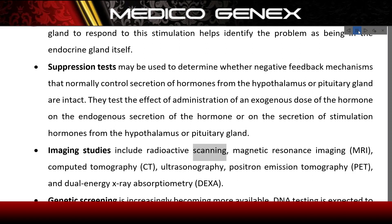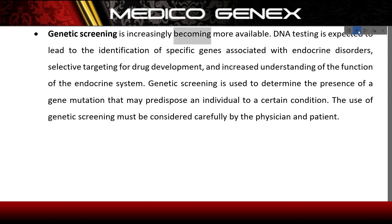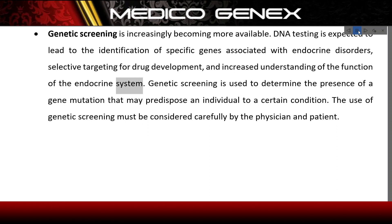Imaging studies include radioactive scanning, magnetic resonance imaging (MRI), computed tomography (CT), ultrasonography, positron emission tomography (PET), and dual-energy X-ray absorptiometry (DXA). Genetic screening is increasingly available; DNA testing is expected to lead to identification of specific genes associated with endocrine disorders, selective targeting for drug development, and increased understanding of endocrine function. Genetic screening determines the presence of gene mutations that may predispose an individual to a certain condition, and its use must be considered carefully by the physician and patient.